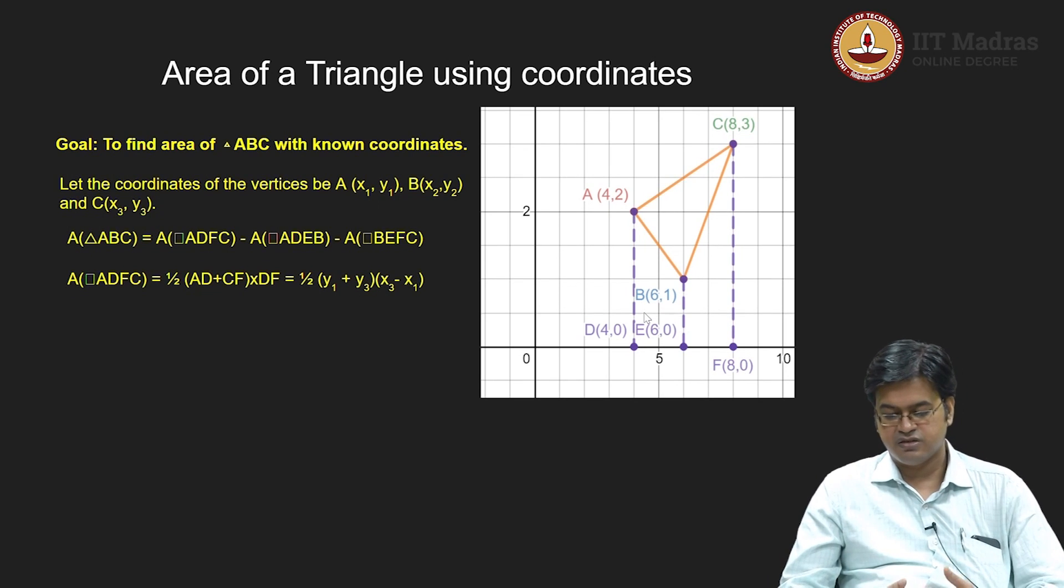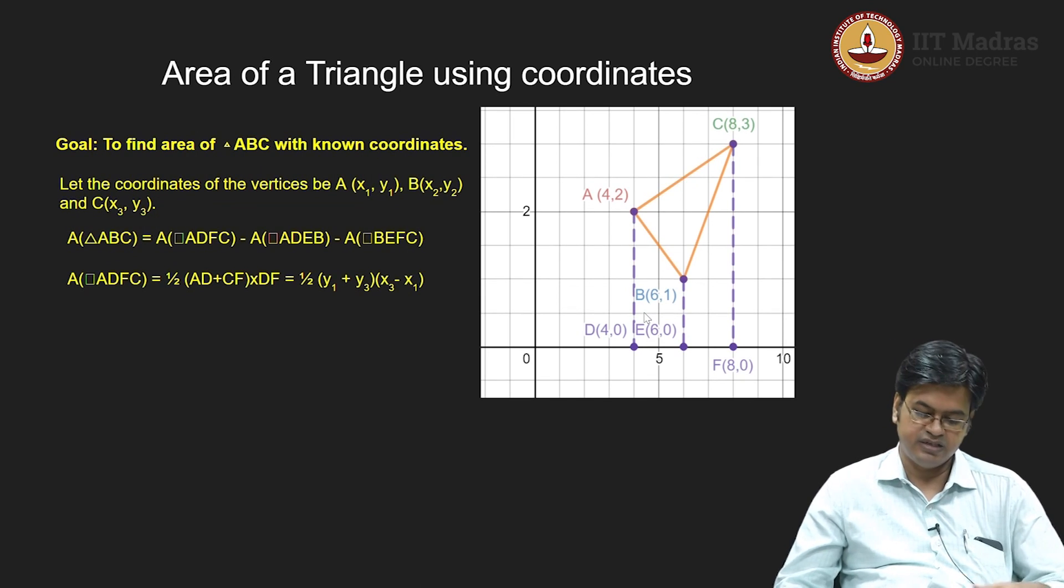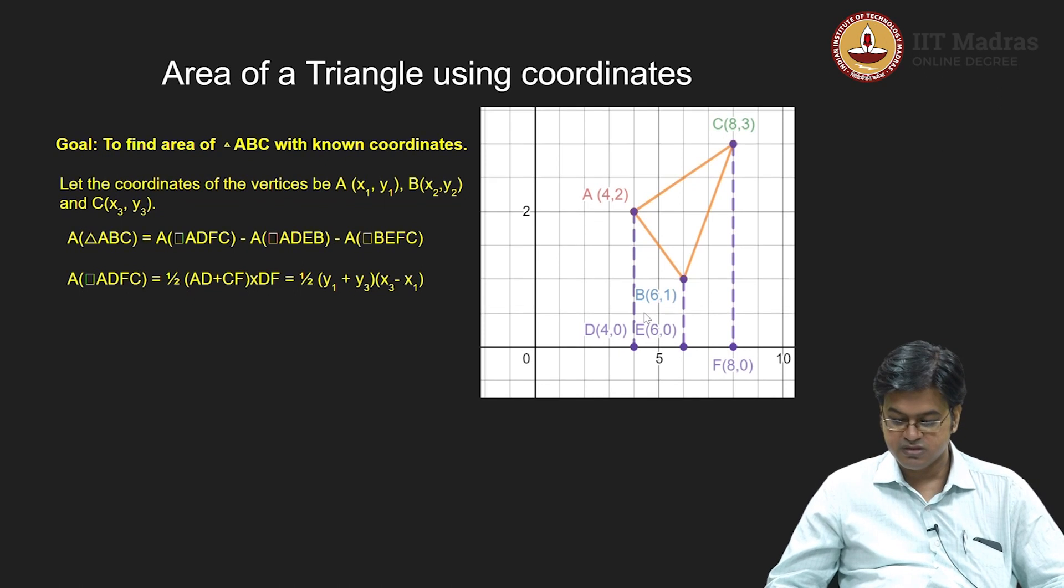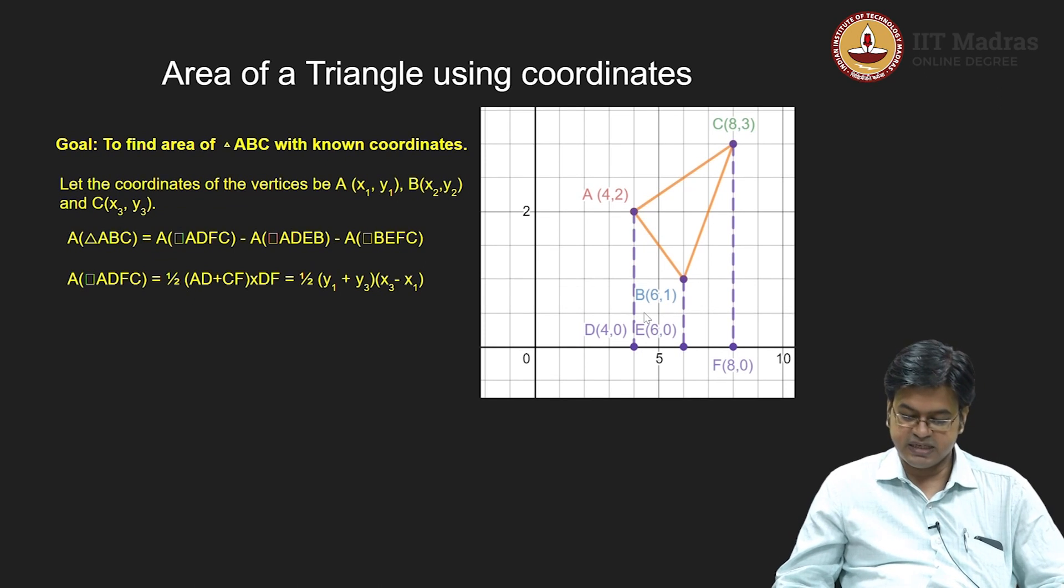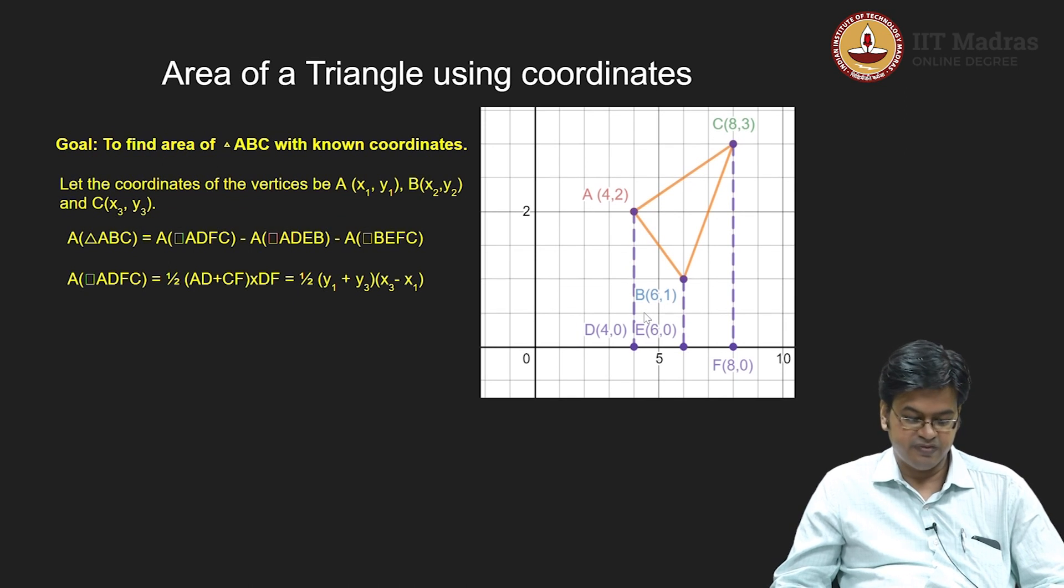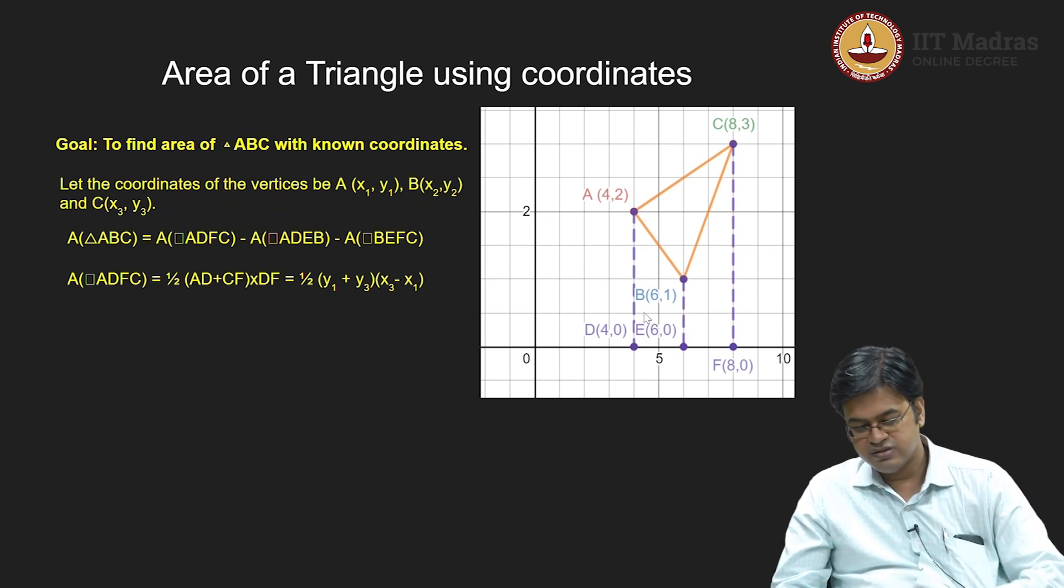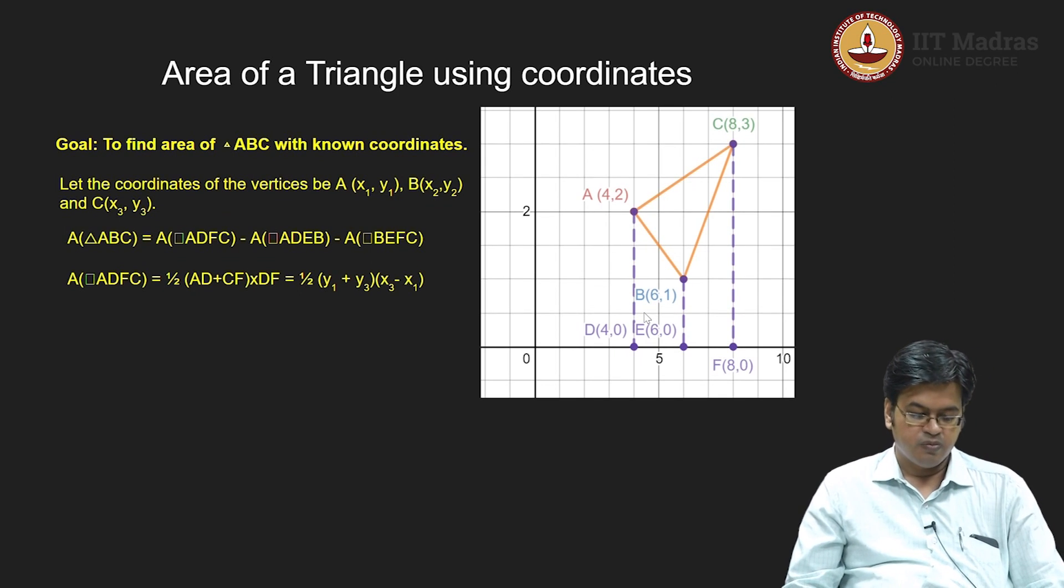I will take average of these two parallel sides, that is half of AD plus FC. Then what is the height? Height should be the perpendicular distance. That is x axis. So I know the distance will be DF. Let us take the general coordinate system rather than using this coordinate system.